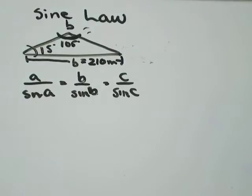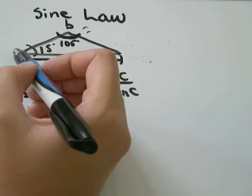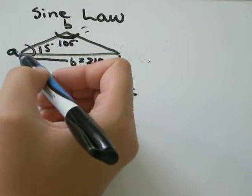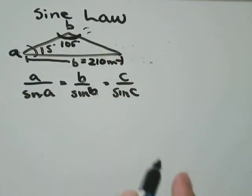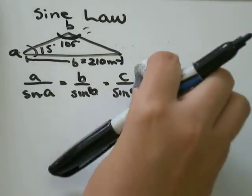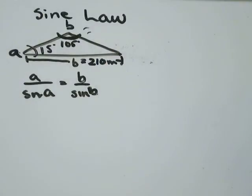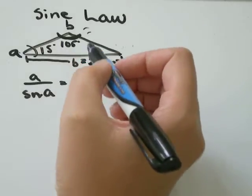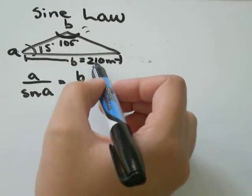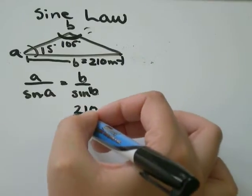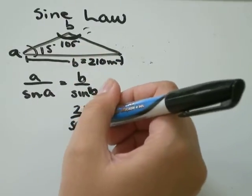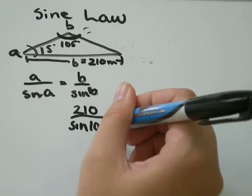It doesn't matter whether I want to say that this angle is A or C, because the formula is pretty much the same whatever the variable is. So I'm just going to say it's A, and I don't need C — I'm only working in A and B. You can think of it as cross multiplication if you want, if it makes the algebra easier. We know that B is 210 meters, and angle B is 105 degrees.